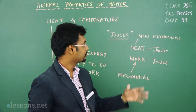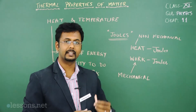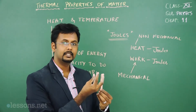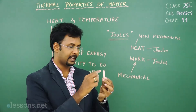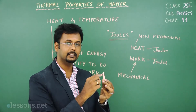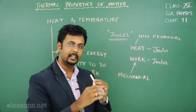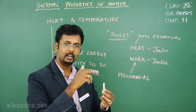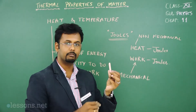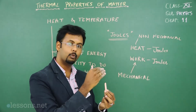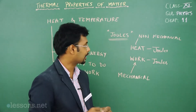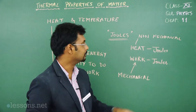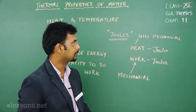When you say non-mechanical way, take a simple example: a candle. You light a candle and it burns — you see a flame. That flame gives you heat as well as light. The chemical energy in the candle is converted into heat energy and light energy. That heat energy is dissipated to the surroundings. You are not doing any mechanical work on the candle — there is no visible movement of the heat, so it is a non-mechanical way of transferring energy.